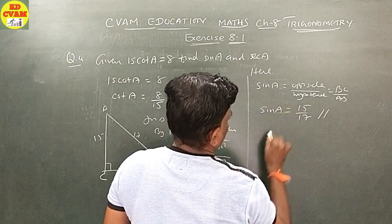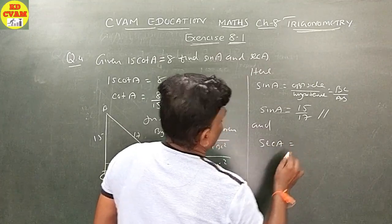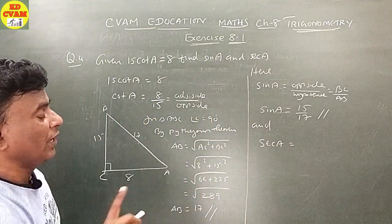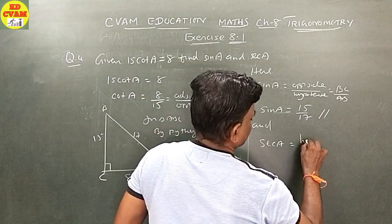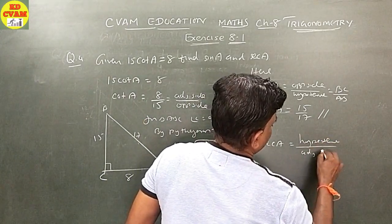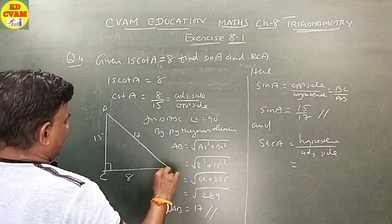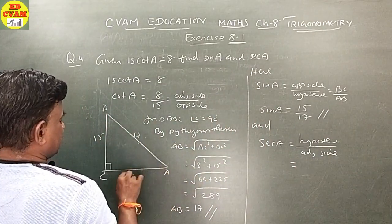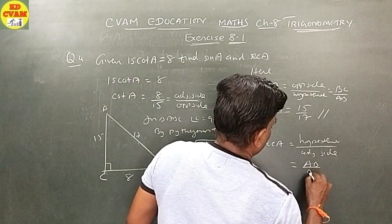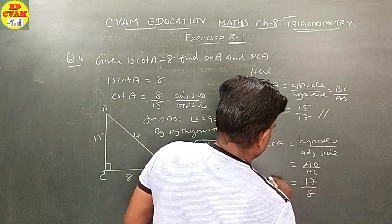Sec A is the reciprocal of cos A, so sec A equals hypotenuse upon adjacent side. Sec A equals AB upon AC. That is, 17 upon 8.